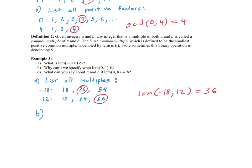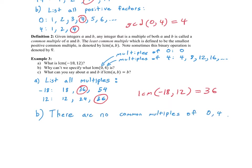Why can't we specify LCM(0, 4)? Multiples of 4: 4, 8, 12, and so on. But multiples of 0: the only number you get is 0 itself — 0 times anything is 0. There are no common multiples between these two lists, so we cannot specify the LCM. This is true for 0 and any other positive integer.